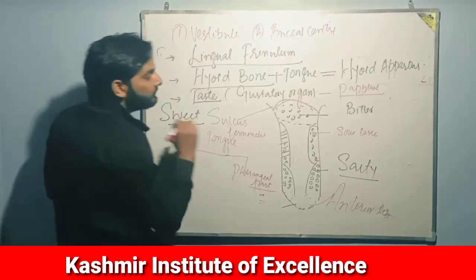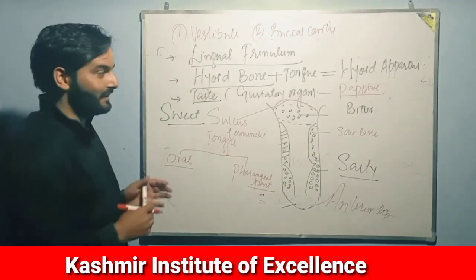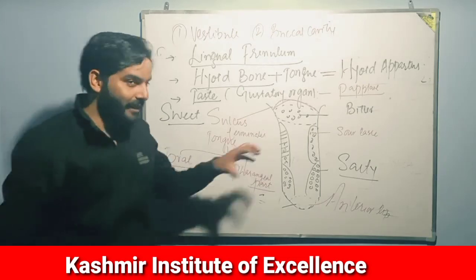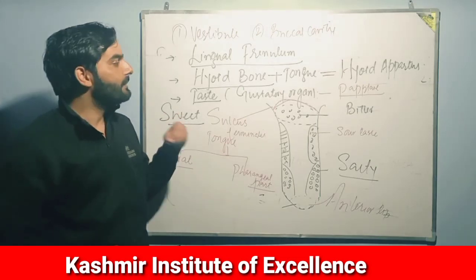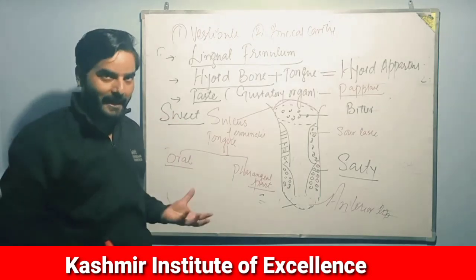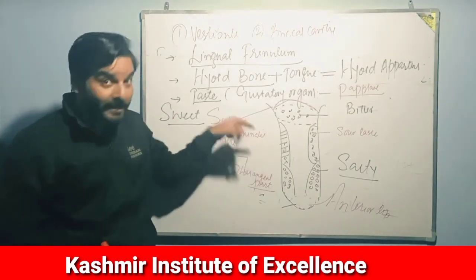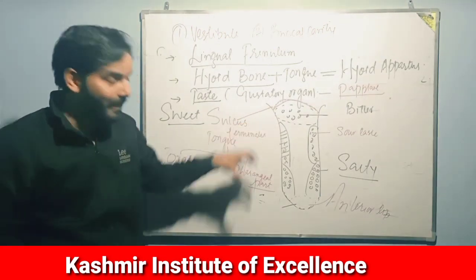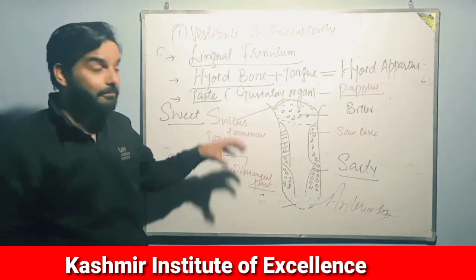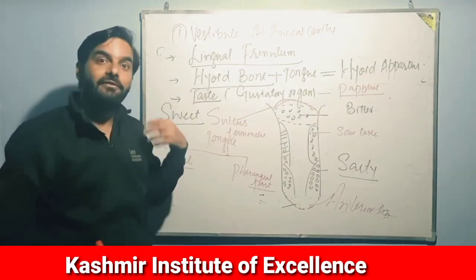In digestion, the tongue helps in rolling of food, mixing food with saliva, and detection of taste. Different parts of the tongue perceive different types of taste.